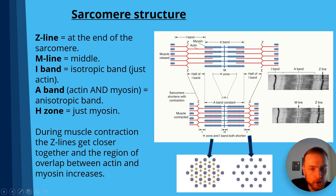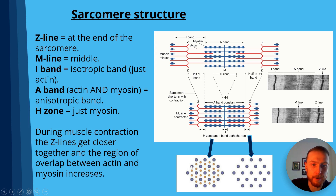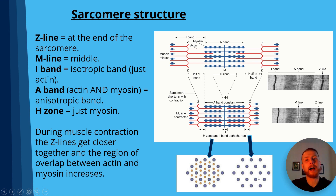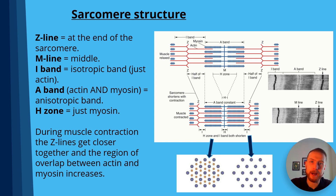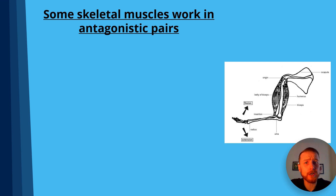AQA A-level biology is keen on getting you to know the difference between a contracted and relaxed muscle fibre in cross-section diagrams. On the left we can see myosin and actin present, whereas on the right we can just see actin. In past paper questions, you may be asked about the A-band — the anisotropic band — showing greater overlap in the contracted state, whereas the I-band increases in size during muscle relaxation.